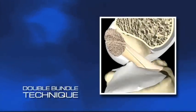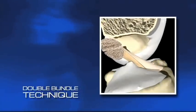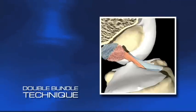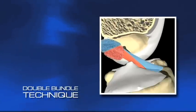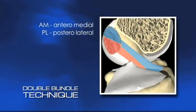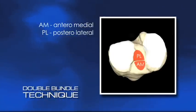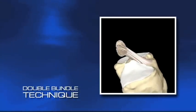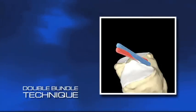The ACL's ability to stabilize pivoting motions comes from its structure — there being two distinct bundles which wrap around each other, giving torsional rigidity to the knee. These are called the AM and PL bundles, and are reconstructed individually when employing the double-bundle repair technique. This accurate anatomical reproduction of the ACL is credited with giving greater stability to the repaired knee than is achieved with a conventional single-bundle ACL reconstruction.